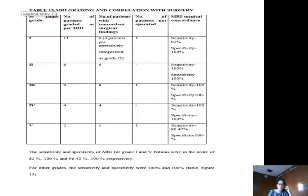The sensitivity and specificity of MRI for grade 1 fistulas were in the order of 80 to 100%. For grade 5, sensitivity and specificity were 96.4% and 100% respectively. For the other grades, both sensitivity and specificity were 100%.